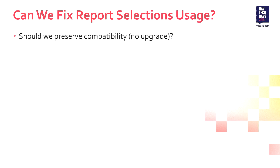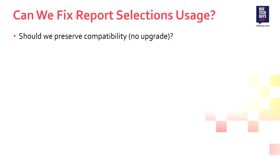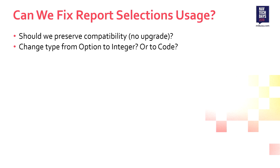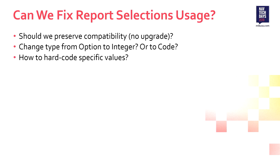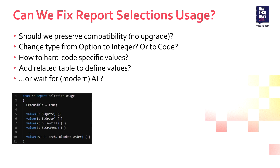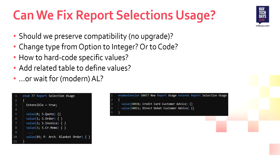So can we fix it? First of all, there's the upgrade issue if we fix it. Should we move it to an integer or to code? Should we hard code specific values or do we want a lookup table that defines the usage? Or should we just wait for modern AL? Because there we define the values in a nice programmatic way using enums, and if you extend it you simply write the new values. So maybe this is just what we should do - wait for modern AL, leave it as is for now.